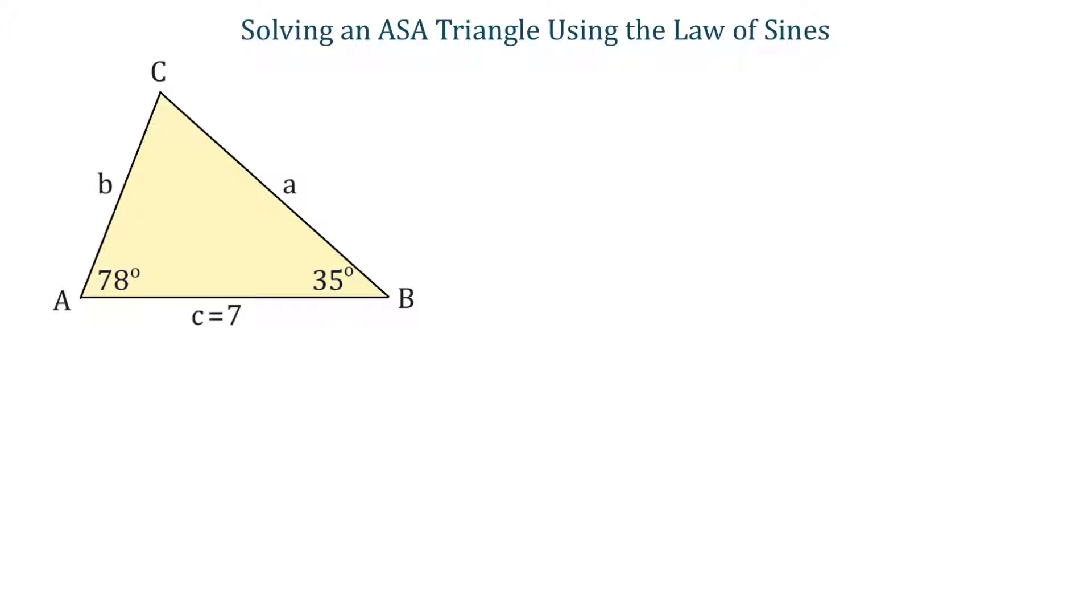To solve this problem, we will use the Law of Sines. And this is side A over sine of angle A equals side B over sine of angle B equals side C over sine of angle C. To be able to use the Law of Sines, we need to know at least one side and the opposite angle.